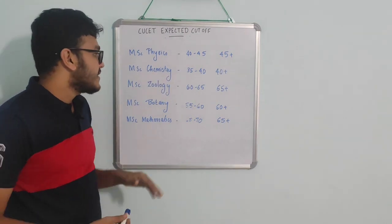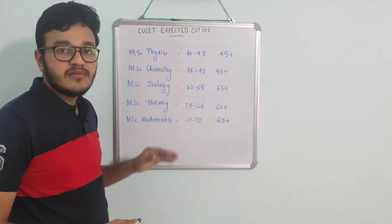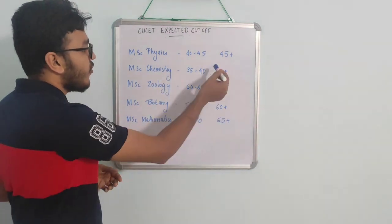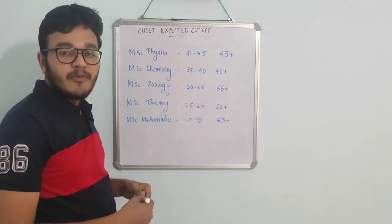In MSC Chemistry, it is about 35-40%. It is about 40%. We will have to ask about 50%.